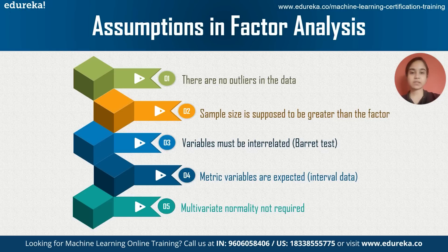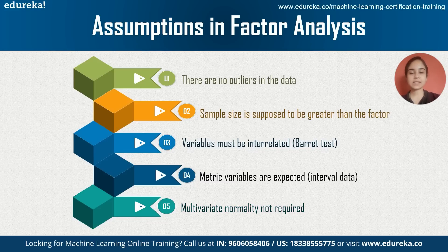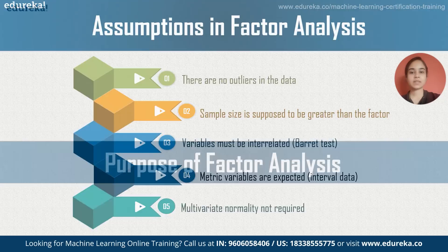Thirdly, the variables are expected to be interrelated. Since factor analysis is based on correlation, variables should be groupable. We can perform Bartlett's test to analyze the correlation. Fourthly, matrix variables are expected to be of numeric type, in an interval scale. Lastly, data is preferred to be normalized, however multivariate normality is not strictly necessary.